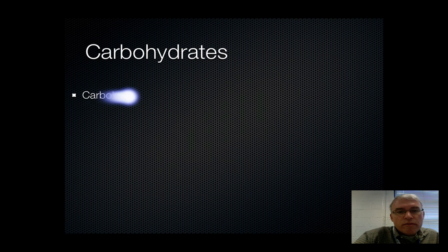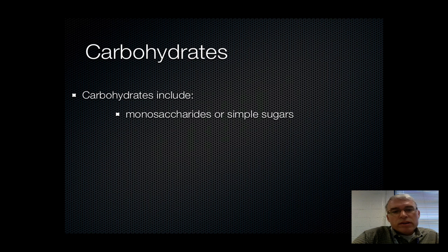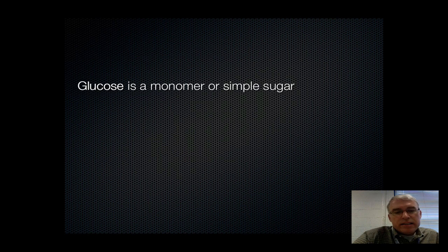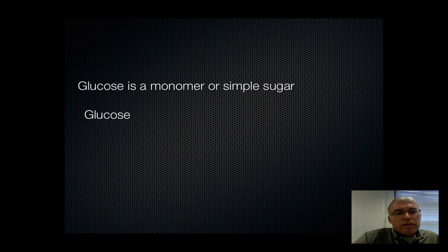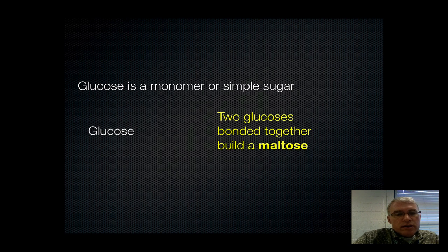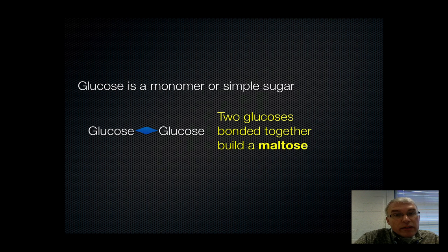Carbohydrates are our first group of macromolecules, and they include three different size categories: monosaccharides, otherwise known as simple sugars, disaccharides, and polysaccharides. Glucose is the monomer you're probably going to hear the most about — it's the sugar that plants make during photosynthesis, and it's a simple sugar. If we take two glucoses and hook them together, we build a disaccharide, in which case we build a molecule called maltose. Maltose is another kind of sugar, a little bit bigger than glucose — twice the size — and it's called a disaccharide.